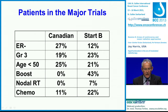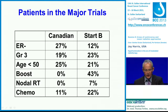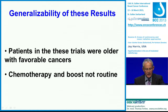It's important to think about who were the patients in these trials. They tended to be favorable patients. The vast majority were ER positive; very few were grade 3 or ER negative. Less than 25% were under the age of 50. In the Canadian trial, no patients got a boost; 43% in START-B. Nodal radiation was not allowed in the Canadian trial and was used in only 7% in the START-B trial. Very few patients got adjuvant chemotherapy. So the patients in these trials were older with more favorable cancers, with chemotherapy and boost not routinely used.